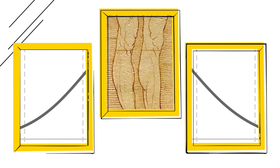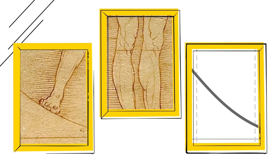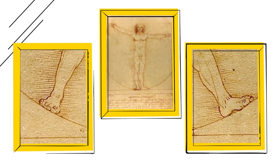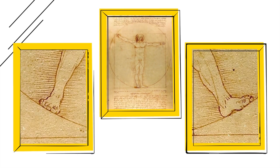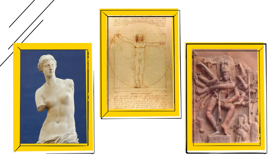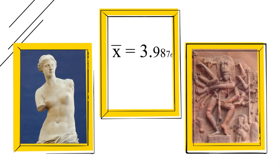Would you guess that the number of limbs most people have is significantly above the average? Most people have 4, few have less than 4, but almost no one has more. Thus, the average is less than 4, pushing most people above the average.